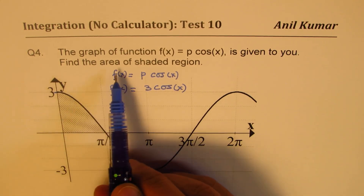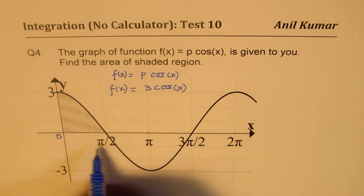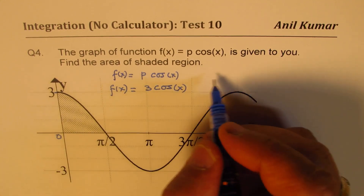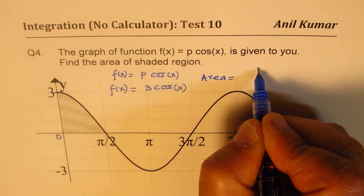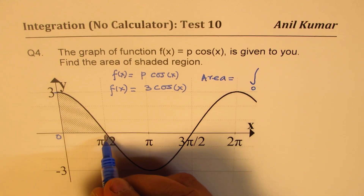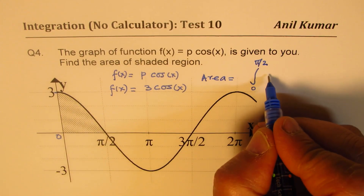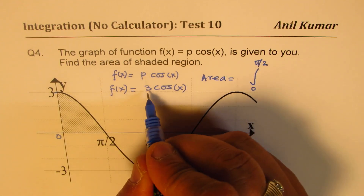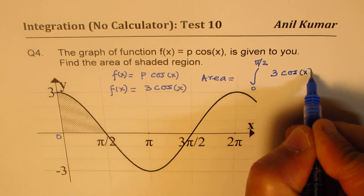Now, we need to find the area of the shaded region — that means from 0 to π/2. So the area can be written as a definite integral between 0 and π/2 for the given function p·cos x, where p is 3. So we integrate 3·cos x dx.